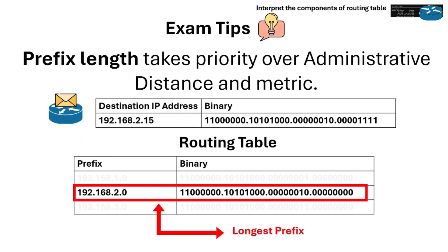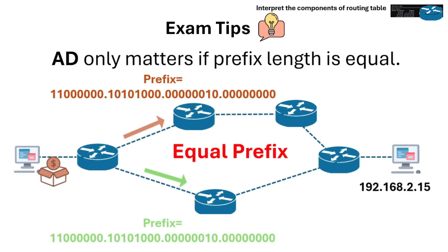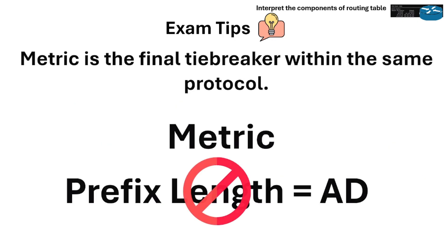For exam tips: prefix length always trumps AD and metric. AD only matters if prefix length is equal. And metric is the final tiebreaker within the same protocol.